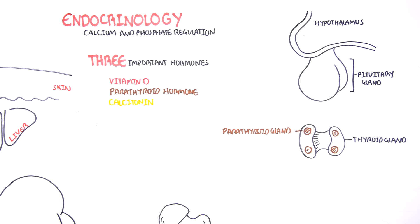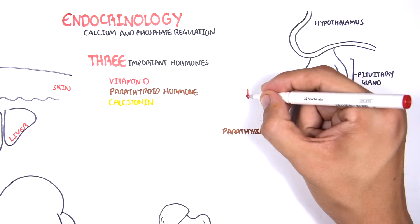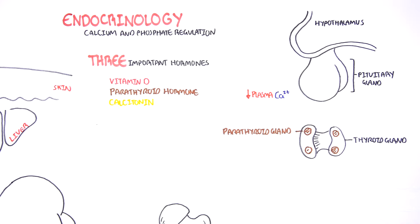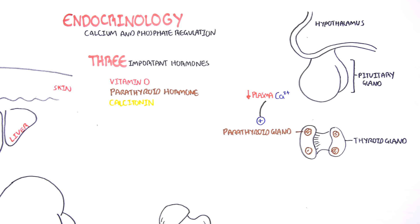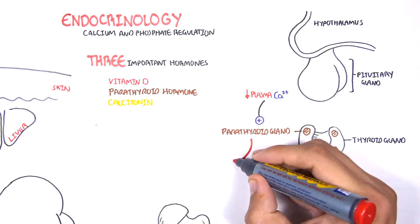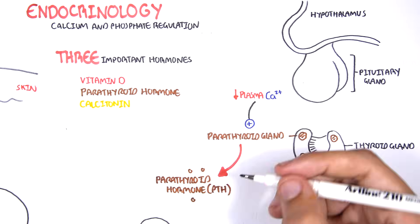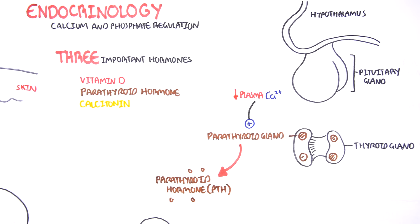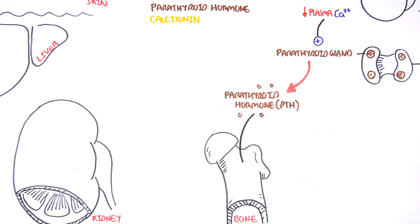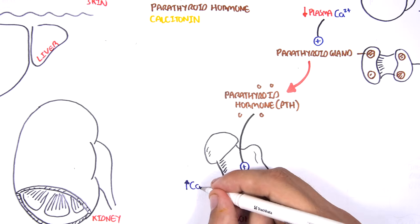Parathyroid hormone is released when there is a decrease in plasma calcium levels. A decrease in plasma calcium will stimulate the parathyroid gland to release parathyroid hormone. It targets the bone first, stimulating it to break down its minerals so that calcium and phosphate enter the plasma, thereby increasing calcium and phosphate levels in the plasma.